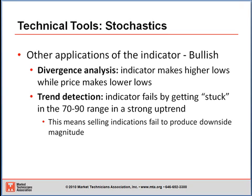What this means is selling indications fail to produce downside magnitude. This is again why when you're buying using the stochastic, you have to make certain that you're in an uptrend and not take sell signals — simply raise stop losses or some such risk management measure when the stochastic is above 80.